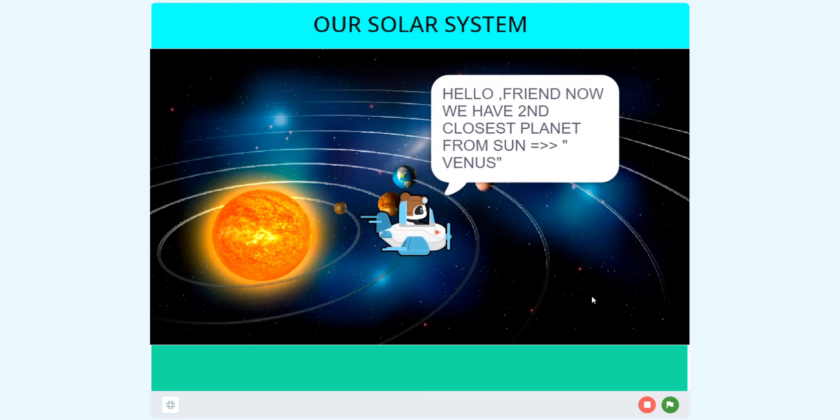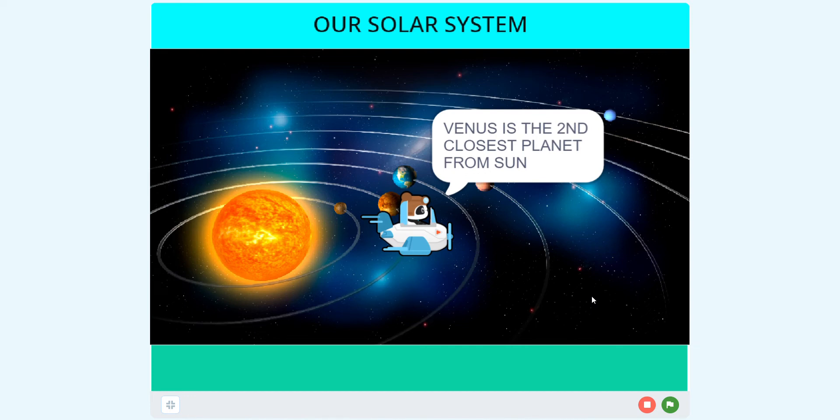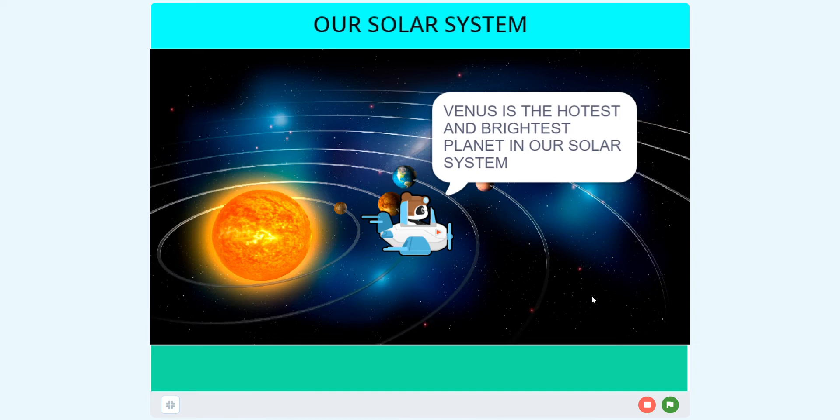Let's move to next planet Venus. Venus is the hottest and brightest planet in our solar system. Venus is the second closest planet from the Sun. Venus does not have any moon like Mercury.